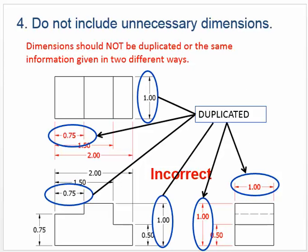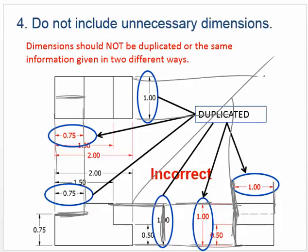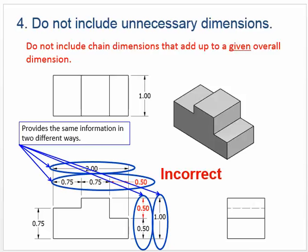Rule number four: do not include unnecessary dimensions. We don't want duplicates. For example, if this height is the same as that height over here, we don't need to have one inch on there twice. Likewise, because of our .45, this dimension carries over — we don't need those duplicates. More examples: it's correct to say one inch, but it would be incorrect to also say .5 and .5, since we can simply subtract to find it.